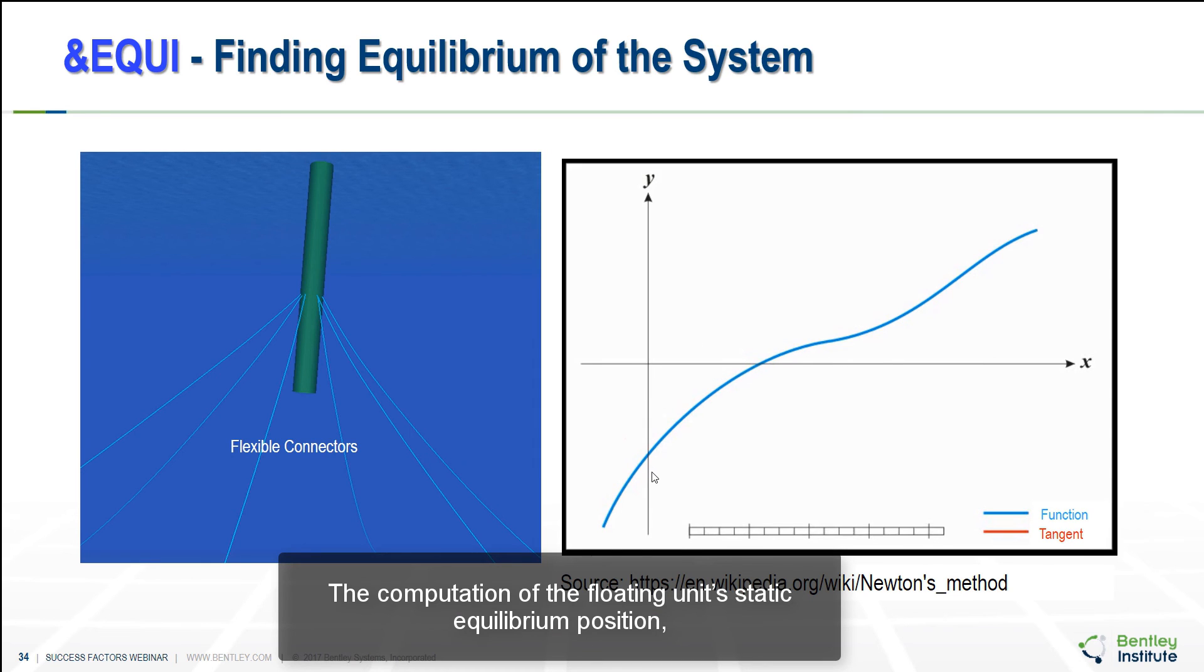The computation of the floating unit's static equilibrium position is obtained by applying the catenary equilibrium equation to each mooring line in order to obtain the out-of-balance forces on the unit and by using an iterative process to compute the final unit equilibrium position.